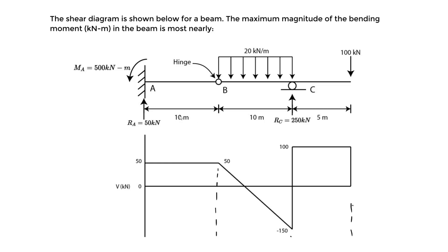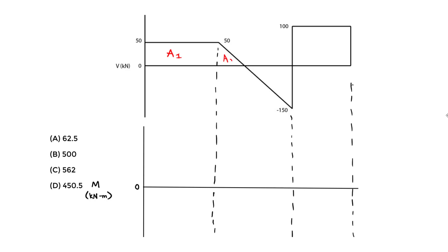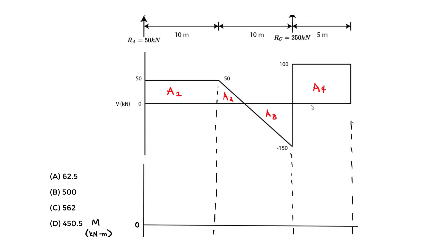The first thing you should always do is find the area of each section by breaking the shear diagram into basic shapes. We have a rectangle, a triangle, a triangle, and a rectangle — four shapes essentially. I'll denote these A1, A2, A3, and A4. We find these areas because the area of the shear diagram gives us corresponding values for the moment diagram. The area is kilonewtons times the base in meters, giving us kilonewton-meters — the units of moment.